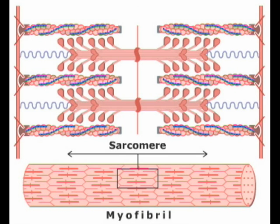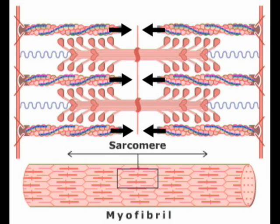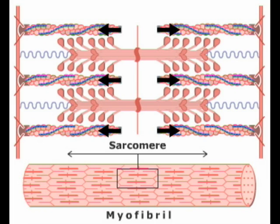In our skeletal muscles, we have bundles of strands called myofibrils. These are made of two proteins, actin and myosin, which overlap. This overlapping means that the two proteins can slide over each other. When the actin slides together, the myofibrils get shorter and the muscle contracts. When it moves apart again, the myofibrils return to their original length and the muscle relaxes.